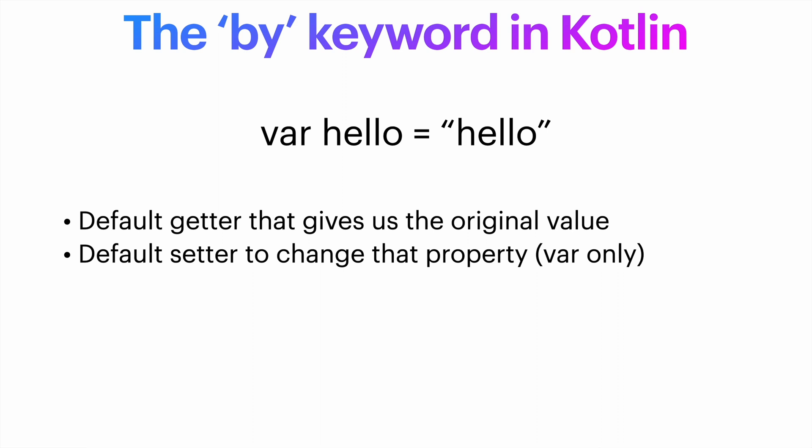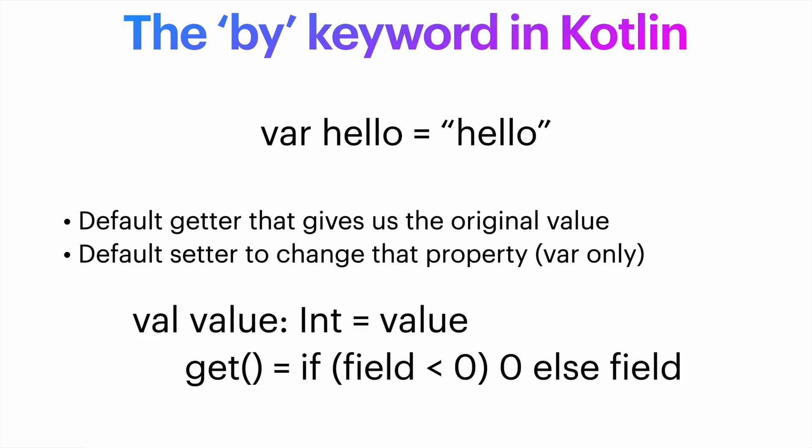We also know that we can override that getter and setter. For example, like so, for this value — we never return the negative number here. We only return zero if it's negative, otherwise we return the actual field.